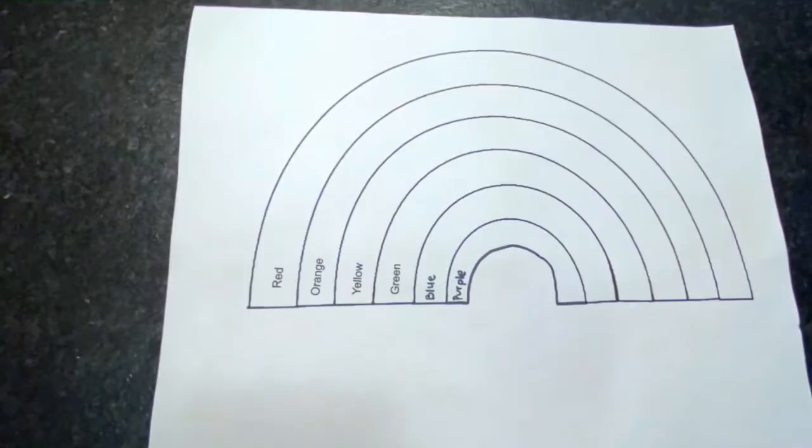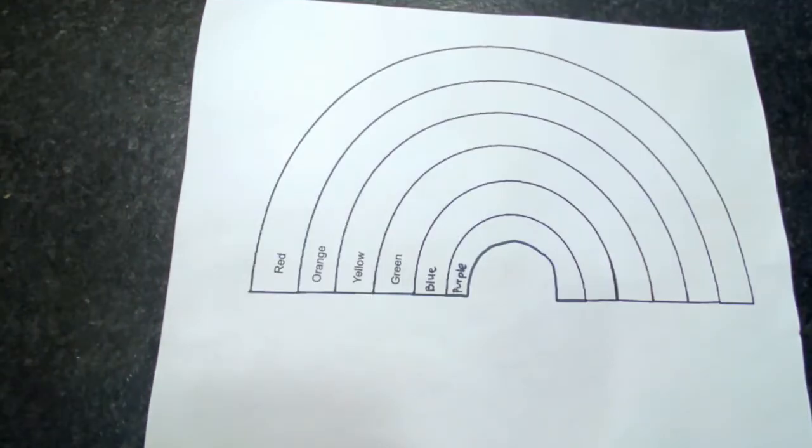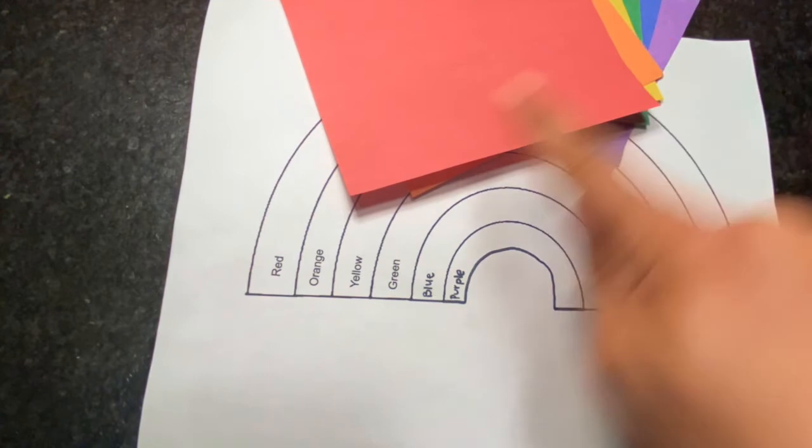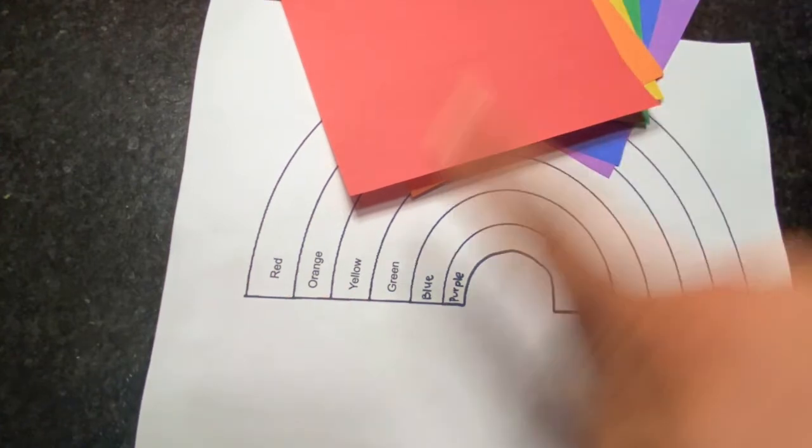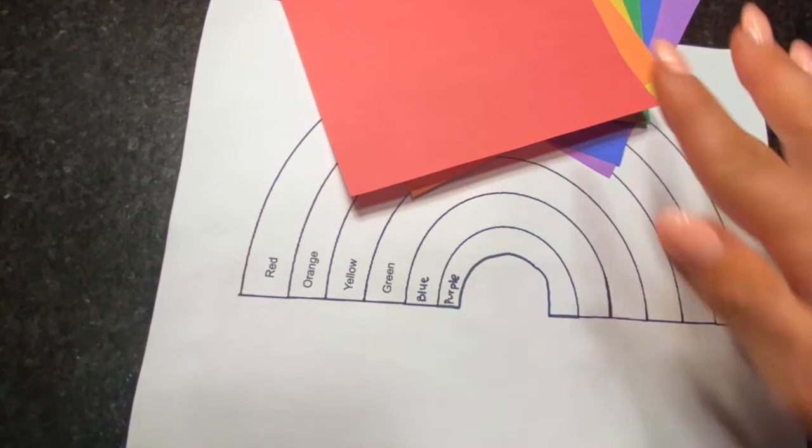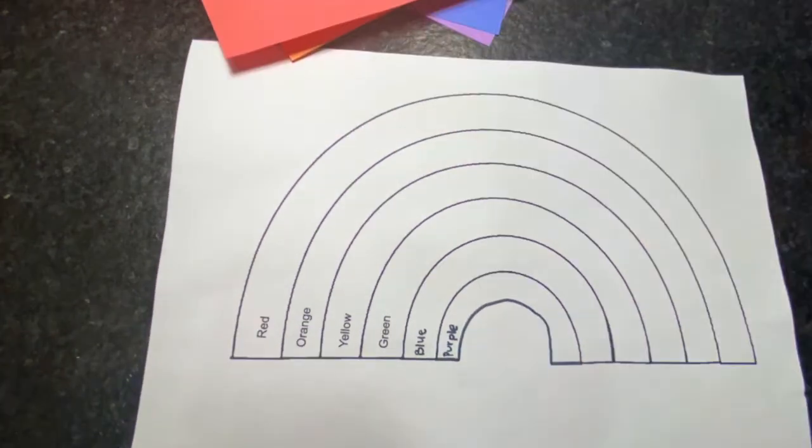First, we'll need our supplies. In our box, we have a template with the colors, but you can use a blank piece of paper. I'm going to be using our template today. We'll also need a piece of paper for every color in the rainbow: red, orange, yellow, green, blue, and purple. Finally, we're going to need a glue stick.